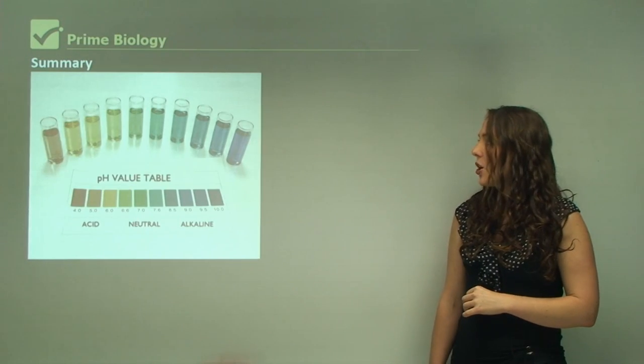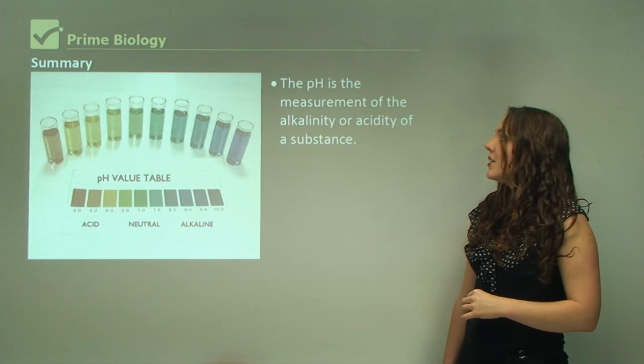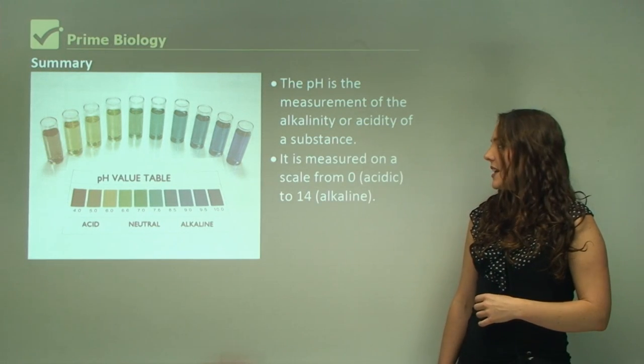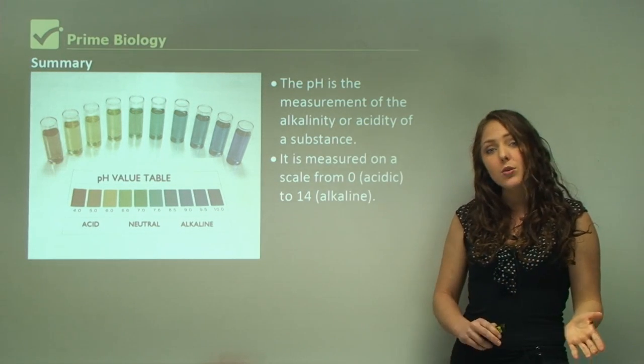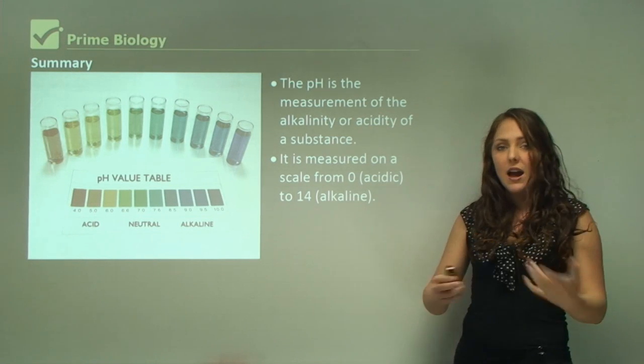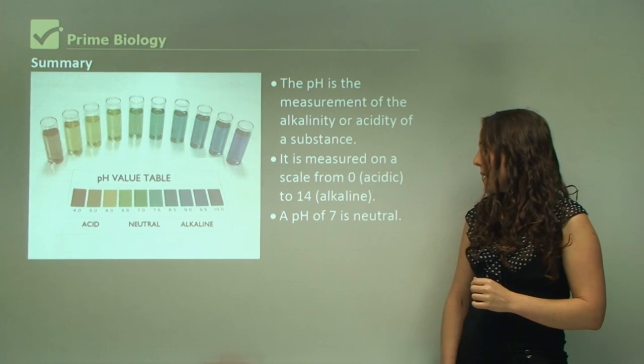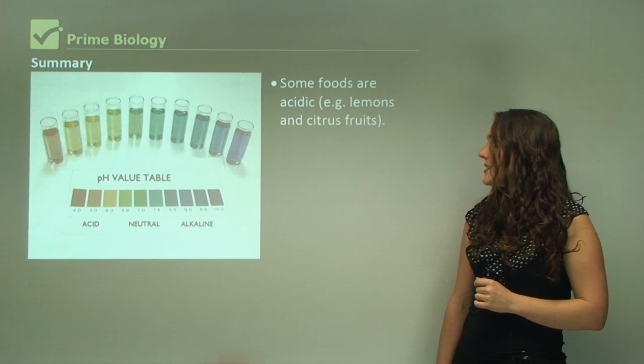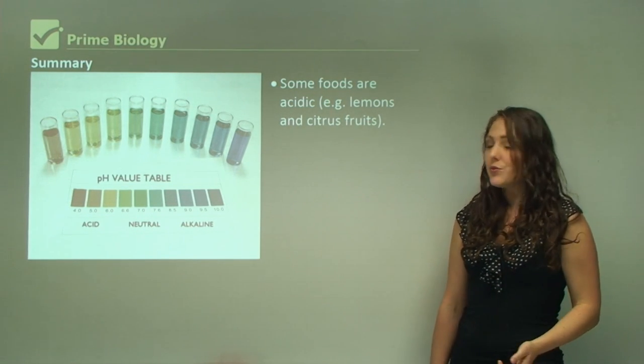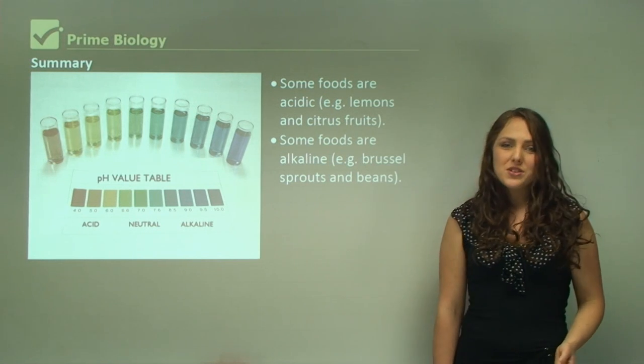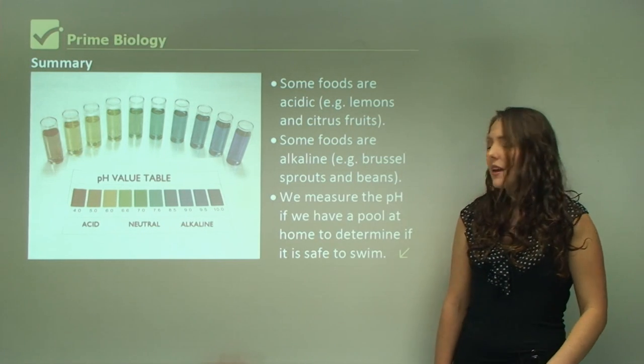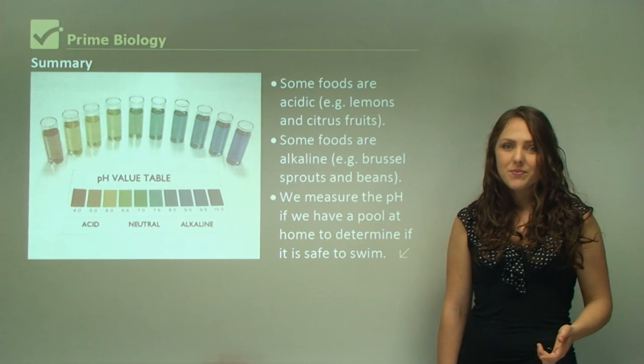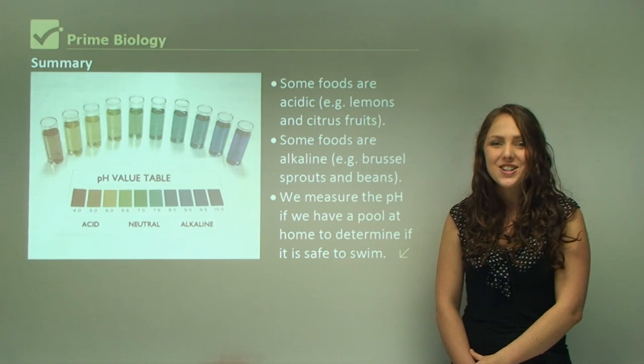The summary for today: pH is the measurement of the alkalinity or acidity of a substance. It is measured on a scale from 0 to 14 depending on how acidic or alkaline it is. A pH of 7 is neutral. Some foods are acidic, for example lemons and citrus fruits. Some foods are alkaline, for example Brussels sprouts and beans. We measure the pH if we have a pool at home to determine if it is safe to swim. This concludes looking at pH levels.